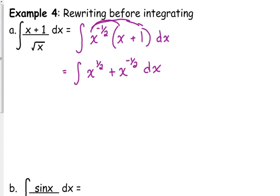Now we can deal with the integration, with the anti-differentiation instructions. It's a power, so we add one to the exponent, divide by the new exponent. Add one to the exponent, divide by the new exponent. Don't forget plus C.